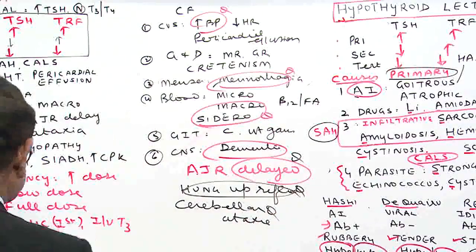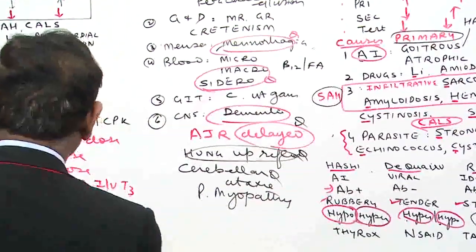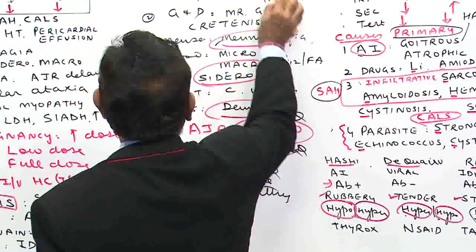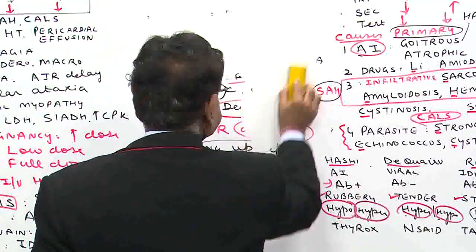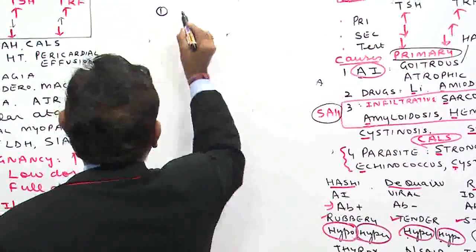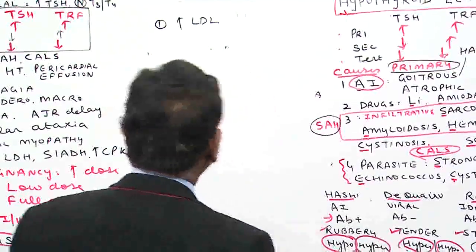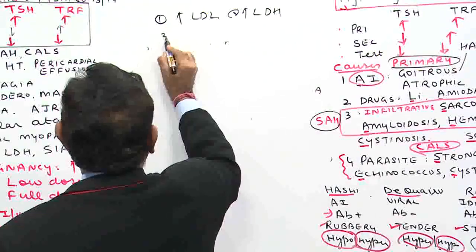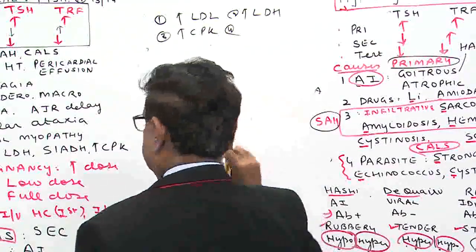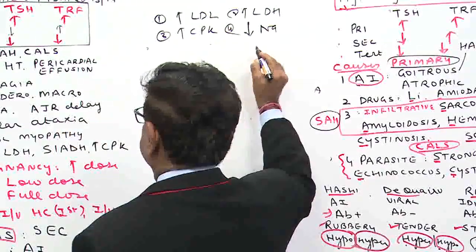Proximal myopathy is a feature in these patients. Other extra findings include increased LDL — due to this increased LDL, these patients are prone to coronary artery disease. There is also increased LDH, increased CPK, and decreased sodium due to SIADH.